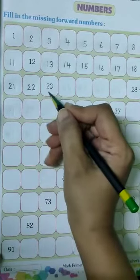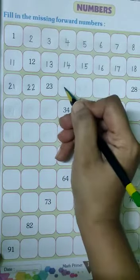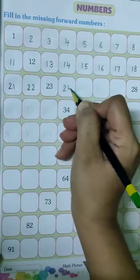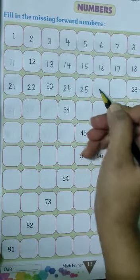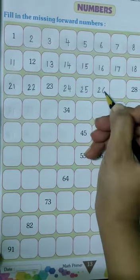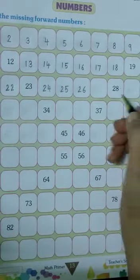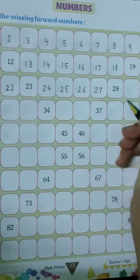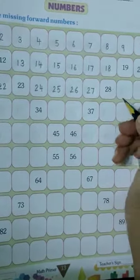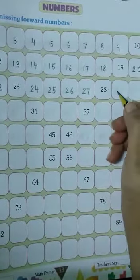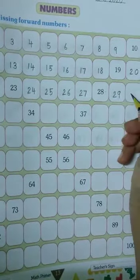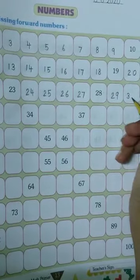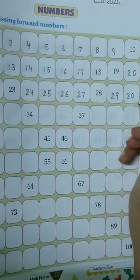Now what comes after 23? Write 24 in this box. Then write 25, 26, then 27. Now 28 is also written here. So after 28, write 29, then write 30.